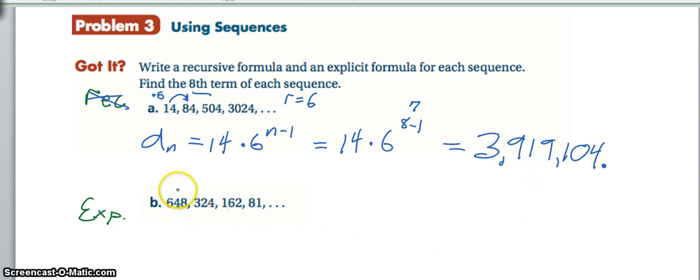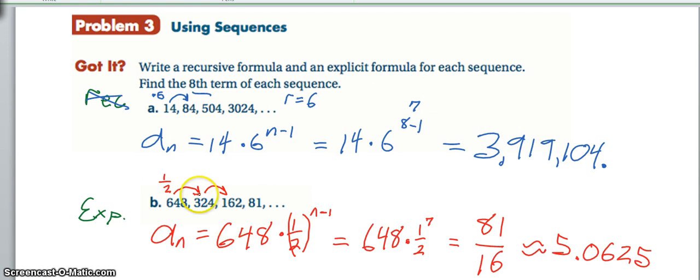Try on B to do the same thing over again, checking first our ratio here, and then set up an explicit formula to solve it. For B here, we have a ratio of 1 half. And if we keep having and having and having, we actually, at the 8th term, end up with 81 divided by 16, or approximately 5.0625.